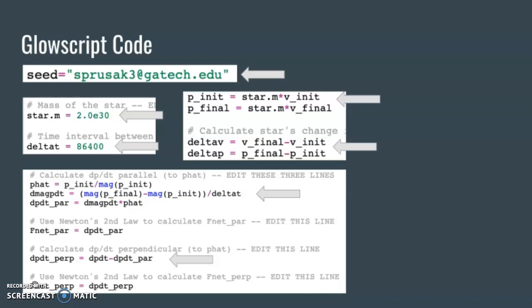Next, I changed the mass to be equal to 2.0 times 10 to the 30th kilograms. I changed delta t to equal 86,400 seconds, which is equal to one day.